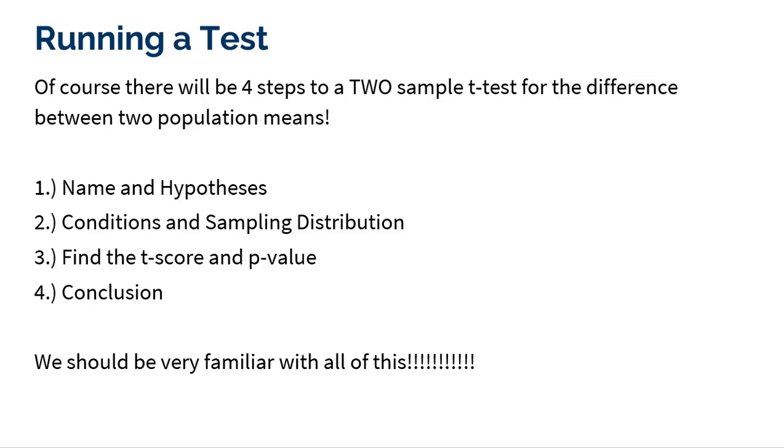Next, we got to check the conditions for that sampling distribution. And then third, this is what we're going to actually use the calculator for. We're going to find that t-score and the p-value. And fourth is we're going to make that conclusion based on that p-value. We should be very familiar with this, so what I want to focus on in this video is how to use your calculator.